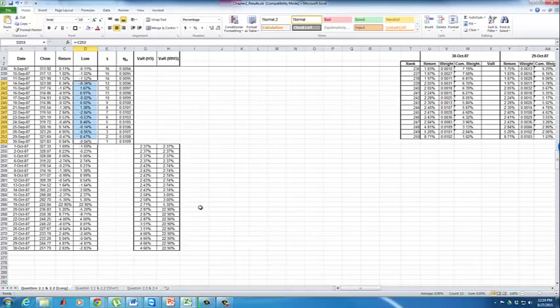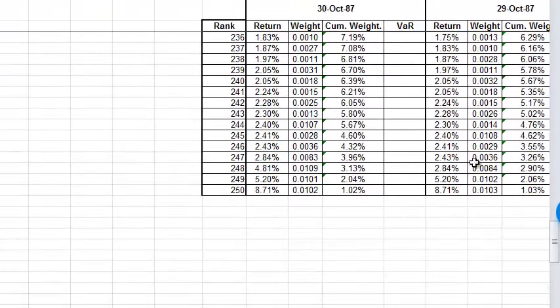When we compute the weighted historical simulation value at risk for October 7, the last 250 returns start on that day. Notice the weights don't change. We're going to copy-paste each series of returns depending on what value at risk we want to compute on the right-hand side.